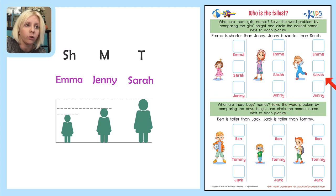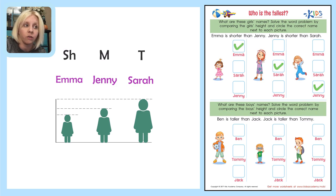When we come over to the picture, we've got all the girls and we have to figure out which one is which. The tallest one is going to be Sarah — this is Sarah. The middle one is Jenny — that's this girl here. And our shortest one is going to be Emma. Let's double check: Emma is shorter than Jenny — yes. And Jenny is shorter than Sarah — yes. Great job, we did that one correctly.